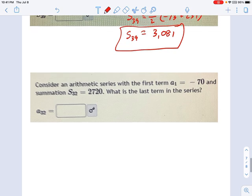Okay, so let's use that formula again right here. And it might look at first like a different problem. But you see, it's the same formula. They're just giving you a different part of the formula. Let's go through how we do that. So they're telling us a1 is negative 70. Okay, great. And they're saying the summation is 2720.